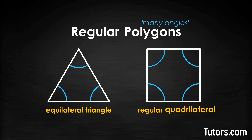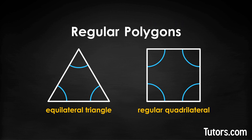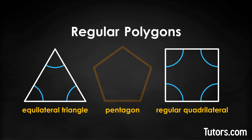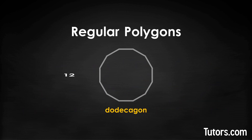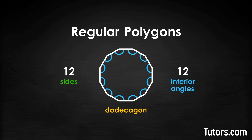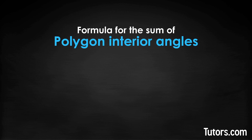So they created words like quadrilateral, which means four sides. Regular polygons have as many interior angles as they have sides: the triangle has three sides and three interior angles, a square four of each, a pentagon five, and so on.